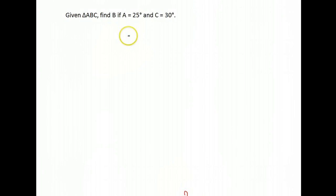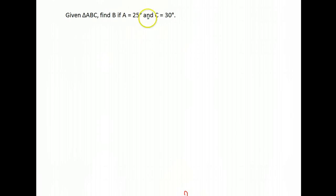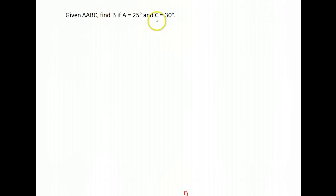Let's take you back to geometry. If you're given a triangle ABC and they want you to find B, where A is 25 degrees and C is 30 degrees — in geometry we learned that the sum of the angles in a triangle is always 180 degrees.